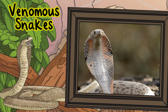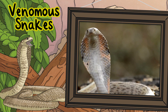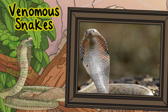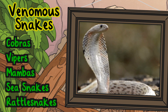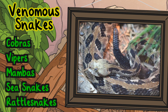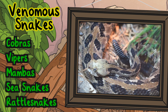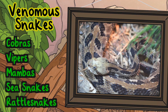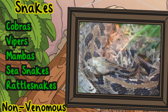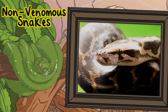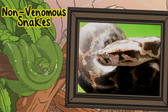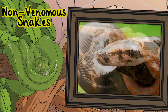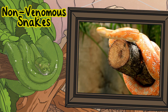These types of venomous snakes include cobras, vipers, mambas, sea snakes, and rat snakes. Non-venomous snakes: these snakes kill their prey by constricting or swallowing them whole.